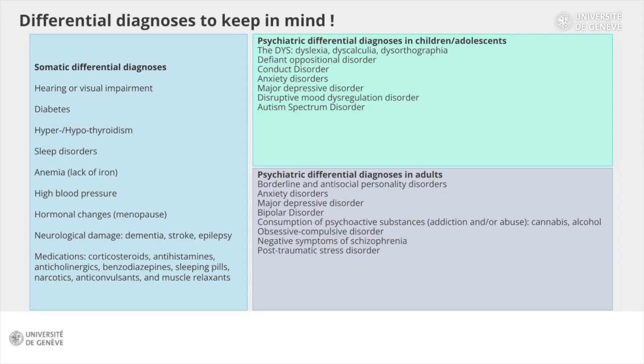Now that we've seen the differential diagnoses in children, let's see what they are in adults. In adults, psychiatric differential diagnoses will also be important to exclude. Antisocial and borderline personality disorders, due to their impulsiveness and problems regulating emotions including anger, can sometimes be confused with ADHD. Moreover, the relational difficulties are very similar to those found in ADHD. Anxiety disorders are not so easy to distinguish from ADHD. Anxiety can generate attentional difficulties sometimes very similar to ADHD. The physical symptoms of anxiety and behavioral manifestations such as nail biting, moving hands and feet, can easily suggest hyperactivity of ADHD.